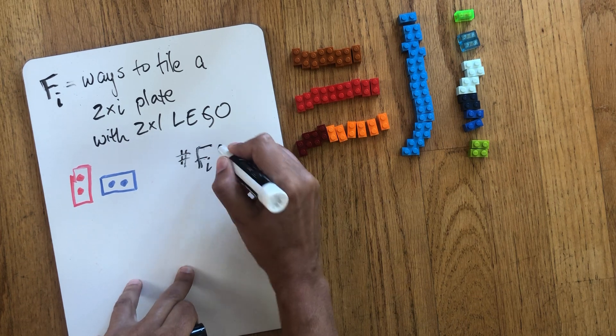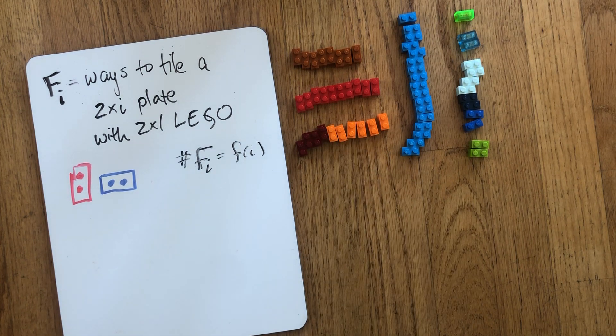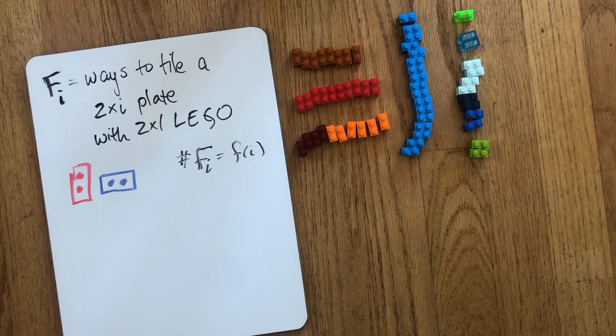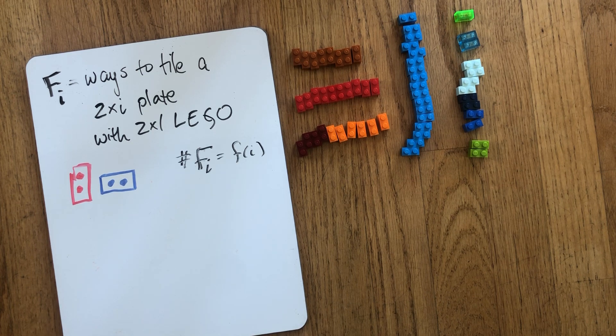Well, F_i, which maybe we can denote by the function F of i. So we're trying to understand, can we get a sense of what this function is? Can we understand it in some way? Can we give a formula for it? That would be the best answer. But first, let's figure out how to understand it by doing some examples.